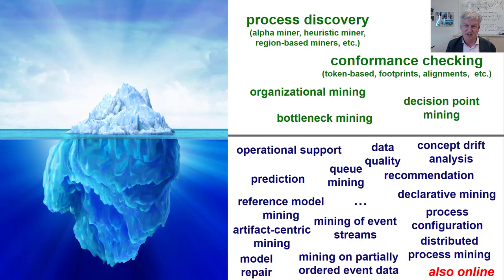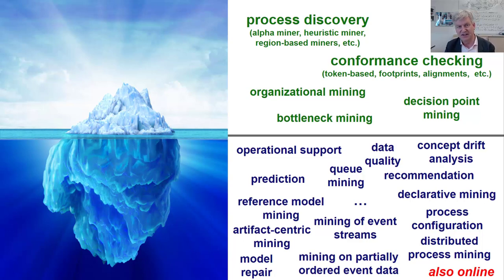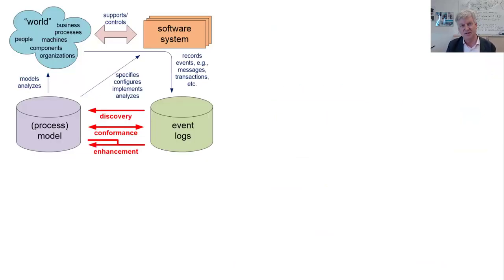Another key distinction is between the offline situation and the online situation. Offline means you just look at historic data. Online means you look at processes while they are evolving, which has two consequences: a technical consequence of dealing with streaming data, and a content-related aspect — in the online scenario you can still influence the cases being processed. That triggers things like operational support, which we will look at in this lecture.